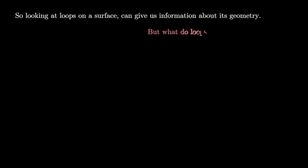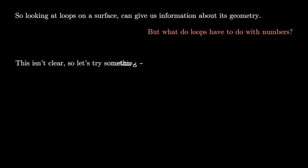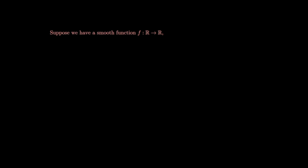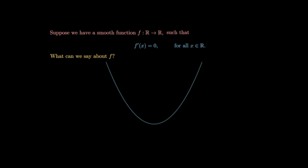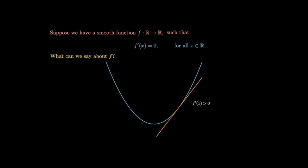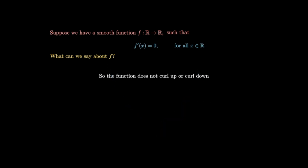But what do loops have to do with numbers? Let's try something else. Suppose we have a smooth function from the reals to the reals such that at every point its derivative equals zero. What can we say about f? Well, if a function slopes down it has a negative derivative, if the derivative is zero it's flat, and if positive the function slopes up. So if the derivative is zero everywhere, the function doesn't curl up or down — it therefore has to be constant.